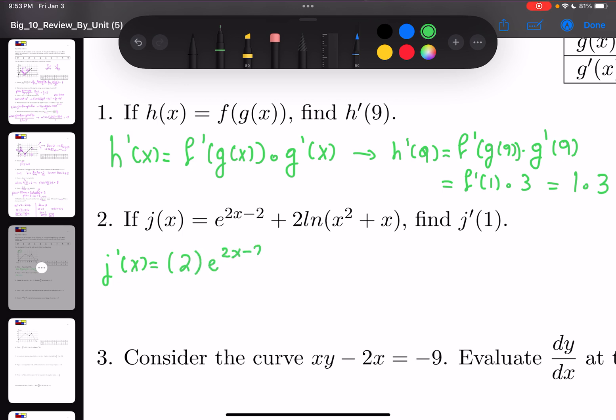So j'(x) = 2e^(2x-2) because it's u'e^u plus 2 times, the derivative of ln(u) is u'/(u), which is (2x+1)/(x^2+x).